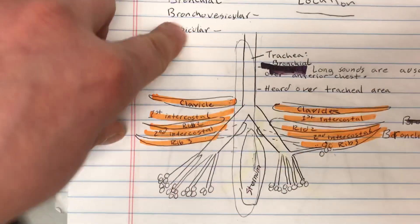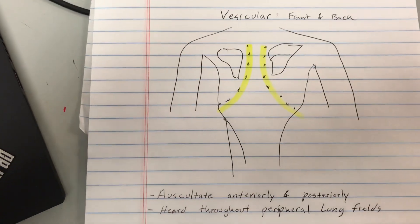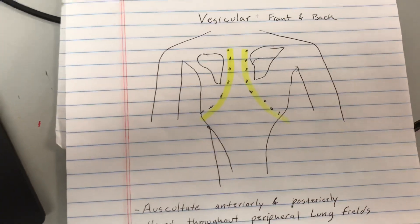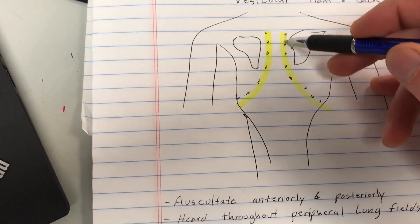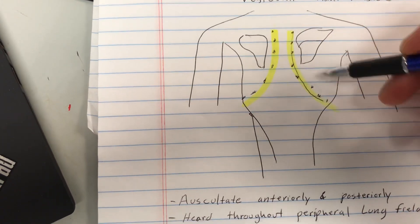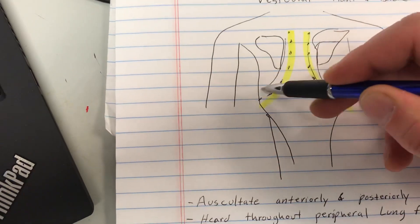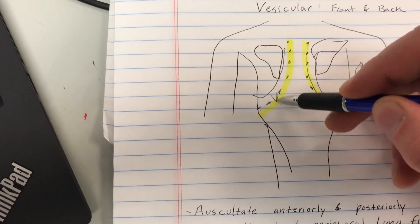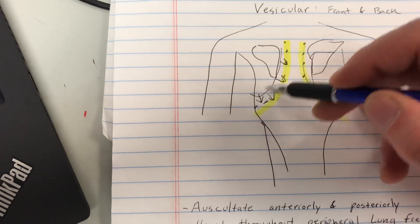So now we're moving to vesicular lung sounds. Vesicular lung sounds can be heard in the front and the back of the patient also, so that means anterior and posterior. But what we're doing is we're checking the peripheral, so along this edge right here. Imagine your lungs are laying here, we're checking the peripheral of the lung lining, so like the outside, towards the outside of the lung lining. Hopefully that kind of makes sense to you guys.